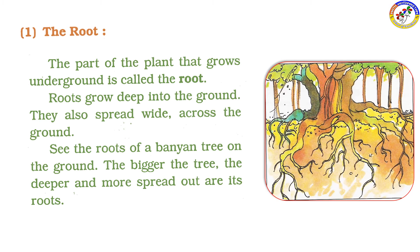The first one is the root. The part of the plant that grows underground is called the root. The roots grow deep into the ground and also spread wide across the ground. See the roots of the plant on the ground.